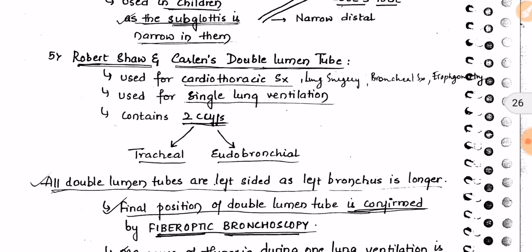The Robert Shaw and Carlens double lumen tube is used for cardiothoracic surgery, lung surgery, bronchial surgery, and esophagometry. It is used for single lung ventilation — when only one lung needs to be ventilated. It contains two cuffs: a tracheal cuff and an endobronchial cuff.